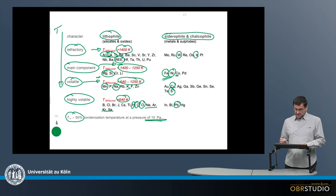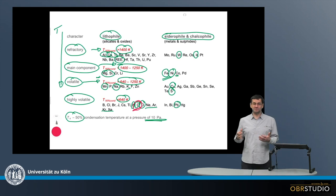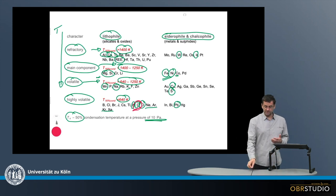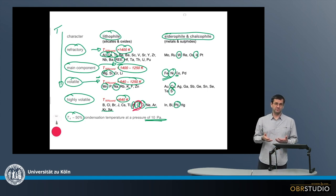Interesting here as well is oxygen. Oxygen is a highly volatile element. However, oxygen condenses at the highest temperatures as well, together with aluminum forming corundum.